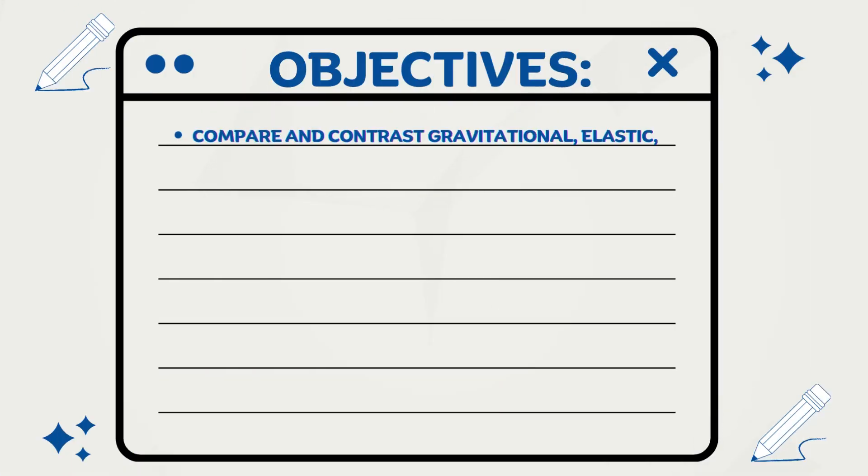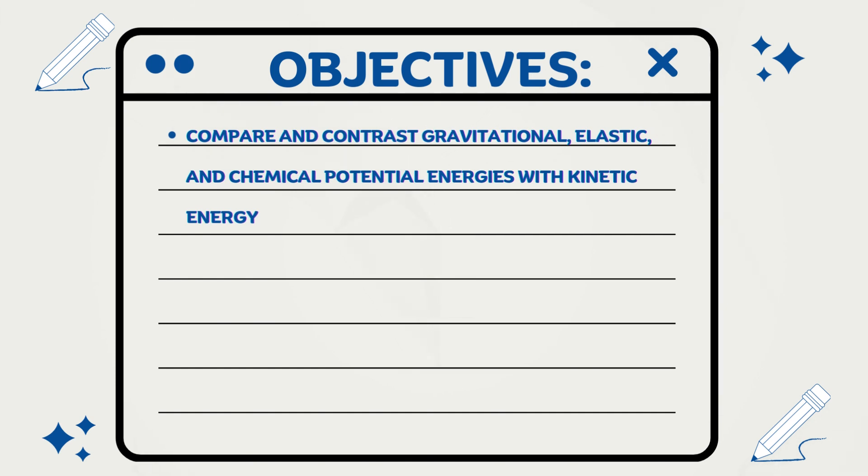In this video, we compare gravitational, elastic, and chemical potential energies with kinetic energy. You'll see how different types of stored energy, like height, stretch, or bonds, can transform into motion, and how they are alike and different.